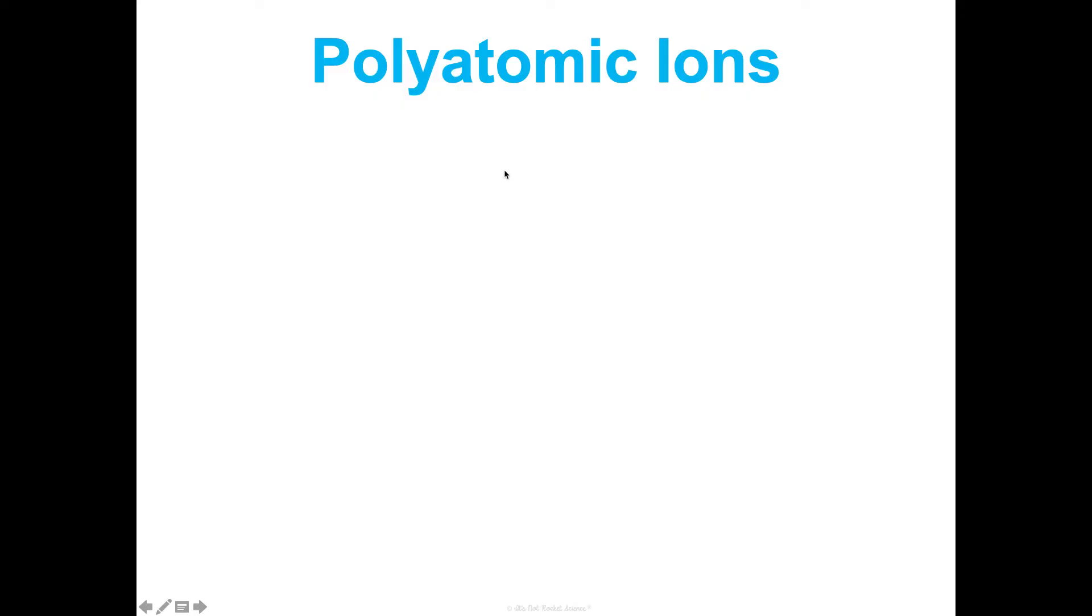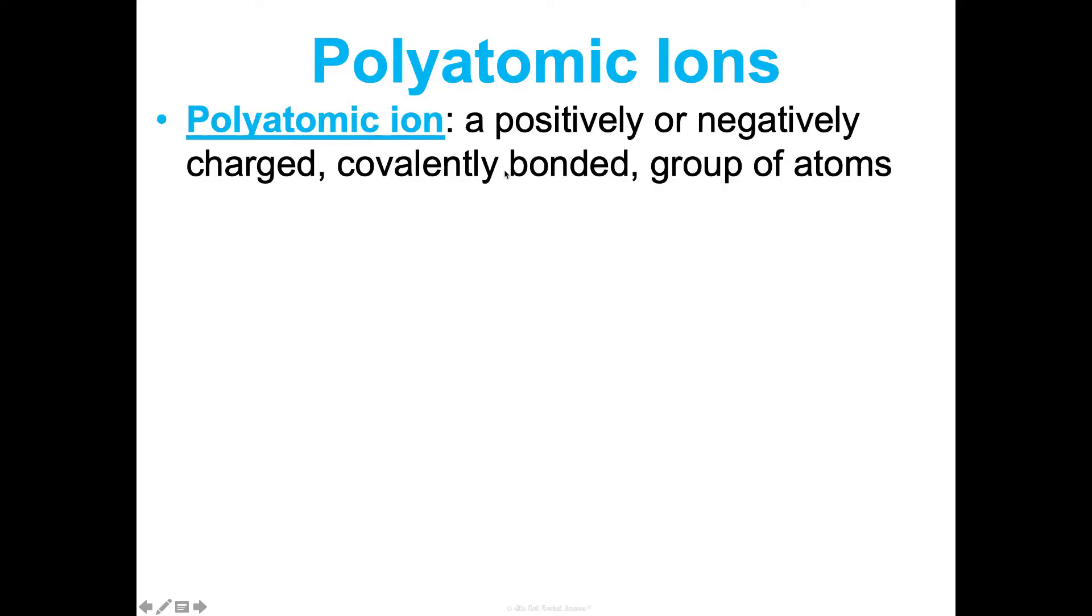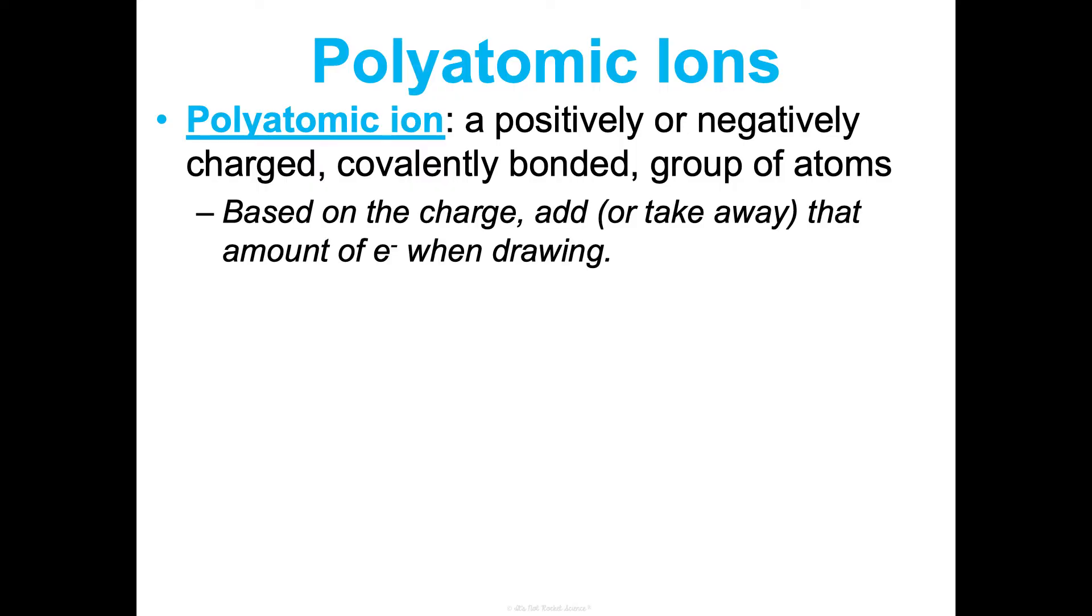One thing I also want you to be able to draw as an honor student is a polyatomic ion. So I think this is like the third or fourth time we've defined this, but that's why you got to know it. It is a positively or negatively charged covalently bonded group of atoms. And you may be thinking, why are we talking about this? It's an ion. It should have been in ionic bonds, which is true. But it's the actual ion itself. The inside of it is atoms that are covalently bonded to each other. And so I want you to be able to draw those as well. And so the only difference here is based on the charge, you're going to add or take away that amount of electrons when drawing.